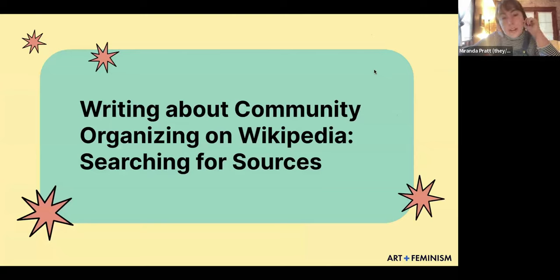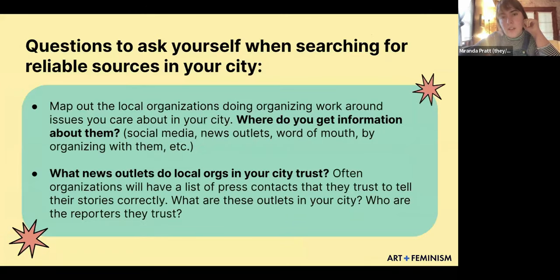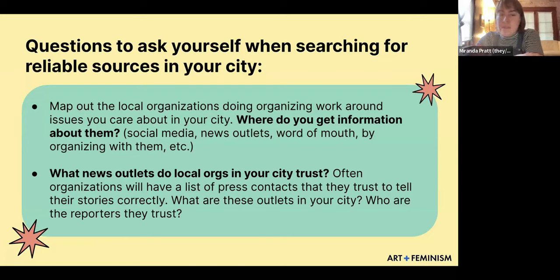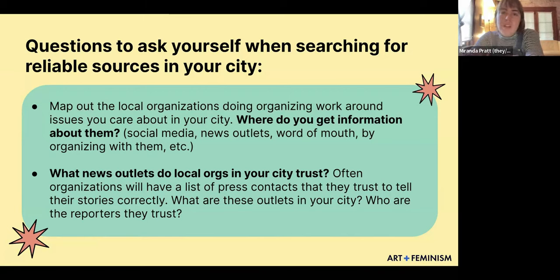Now we'll talk about writing about community organizing on Wikipedia and searching for sources. Questions to ask yourself when searching for reliable sources in your city: map out the local organizations doing organizing work around issues you care about. Where do you get information about them — social media, news outlets, word of mouth, organizing with them? Ask yourself what news outlets do local organizations in your city trust, and who are the reporters they trust to tell their stories correctly. When writing about community organizing, find sources that are aligned with the organization's values.